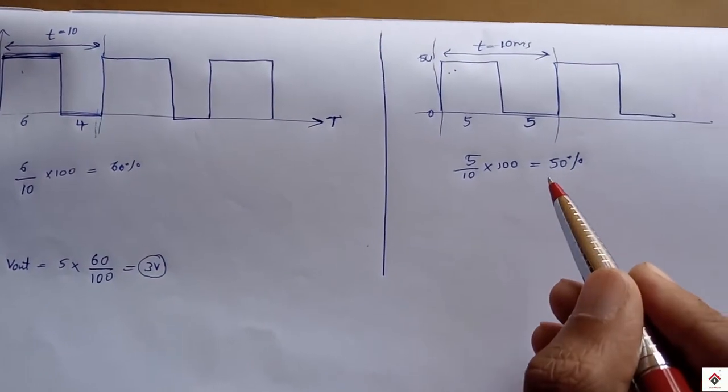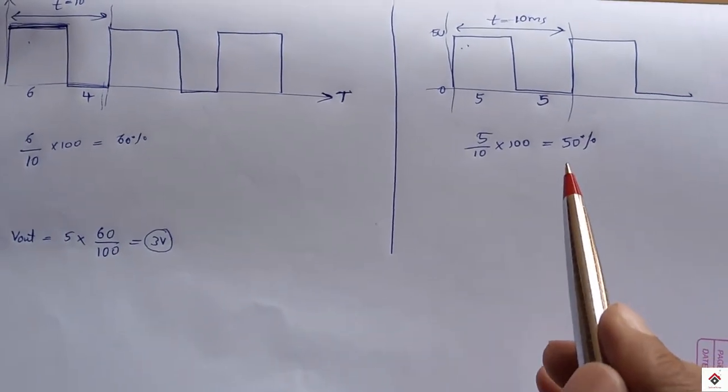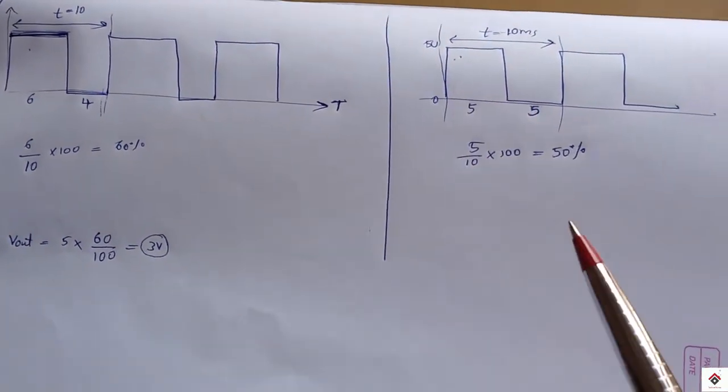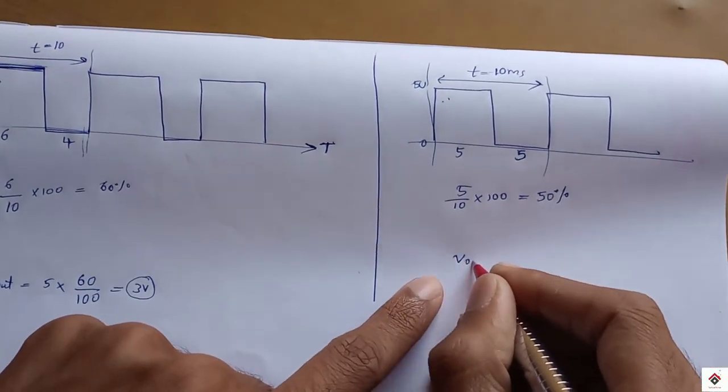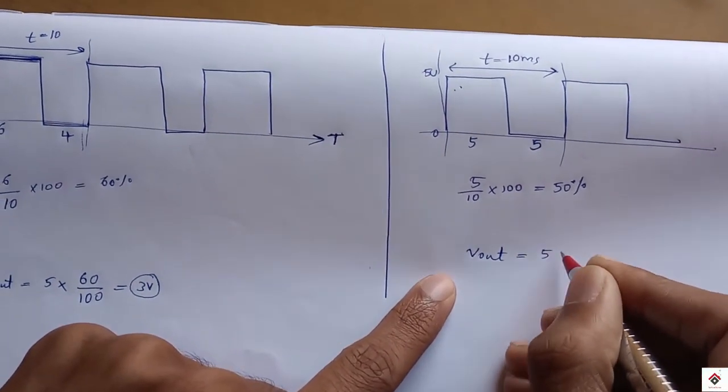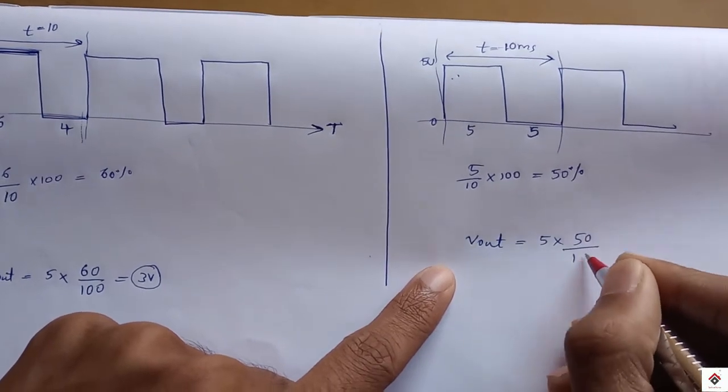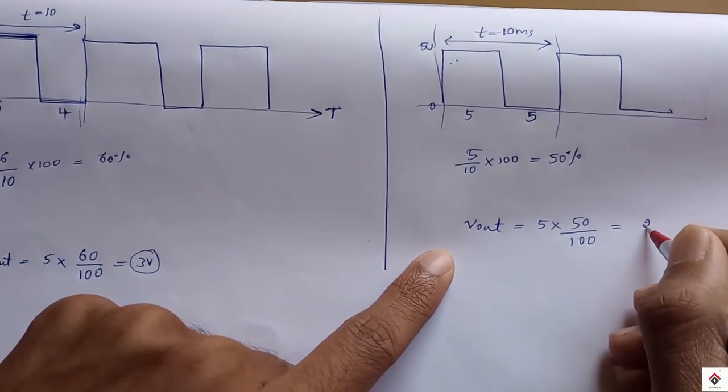So if you consider here you can easily guess if the duty cycle is 50 percentage you get half of the voltage that is 2.5 volt. You can calculate easily like V out equal to 5 into 50 percent, which gives 2.5 volt.